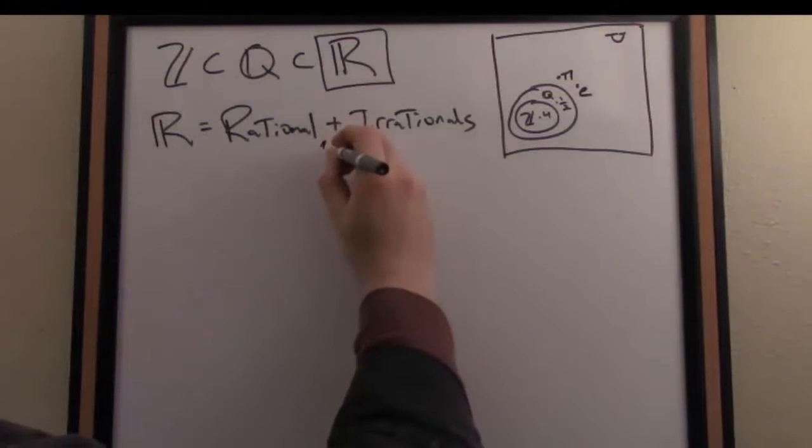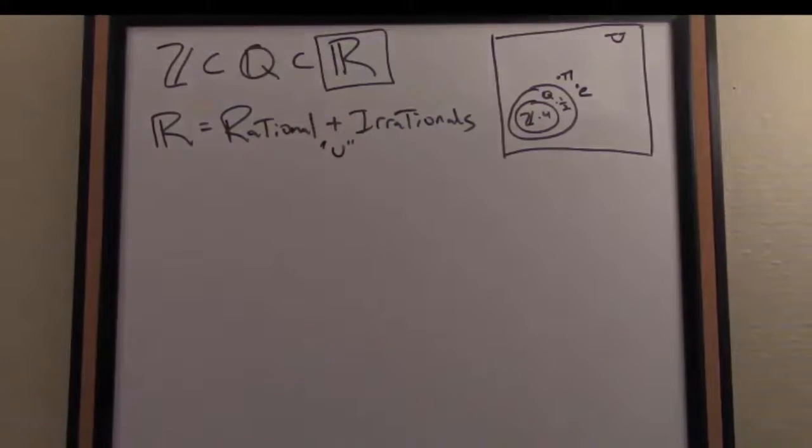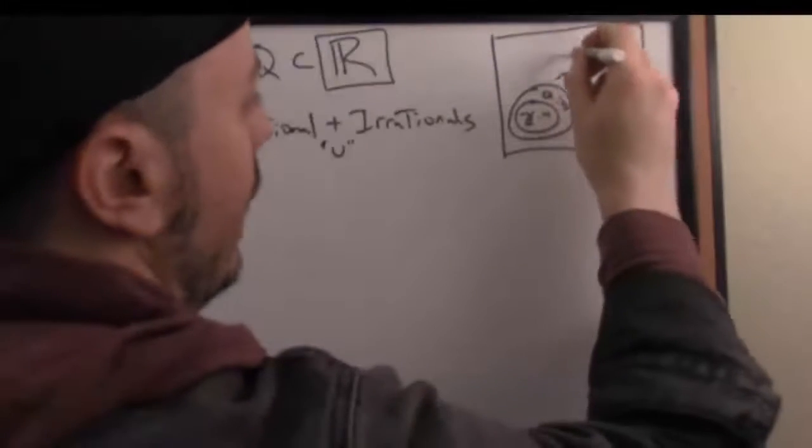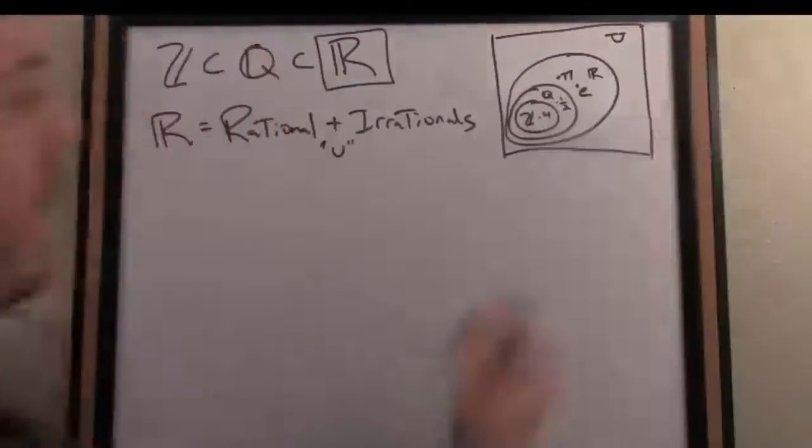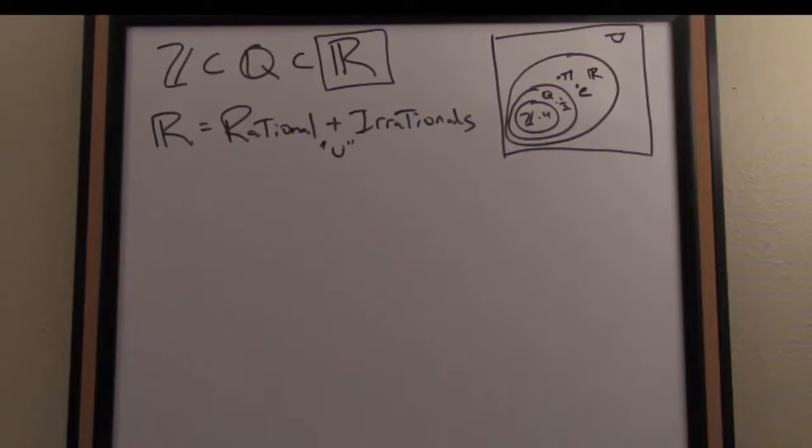In proper notation, we would say it's really the union of those two sets. So now I can add another concentric circle to my Venn diagram, which is showing the sequence of common sets of numbers. Now I've got the reals as the outermost shell here.